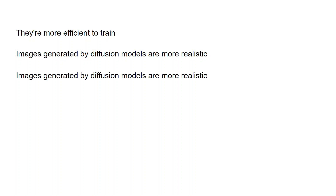It also makes it easier to control the generated images. For example, if you want the dog to be a specific color, you can just include that in your text prompt. Overall, text-to-image AI models have come a long way in recent years, and with the advent of diffusion models they're able to generate more realistic-looking images than ever before.